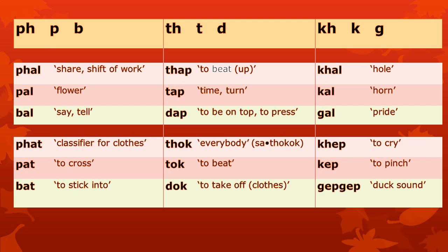Here we see some words that show us that the difference between aspirated, unaspirated, and voiced consonants in Atong is very important. I will read them from top to bottom without their English translations. Now let's read them together. Please repeat after me: phal, pal, bal.